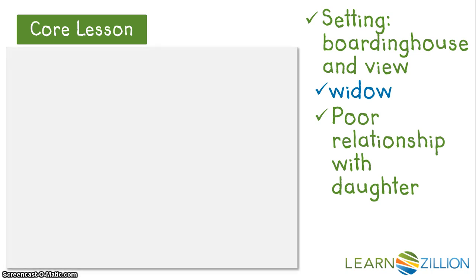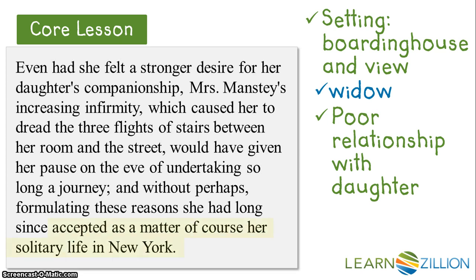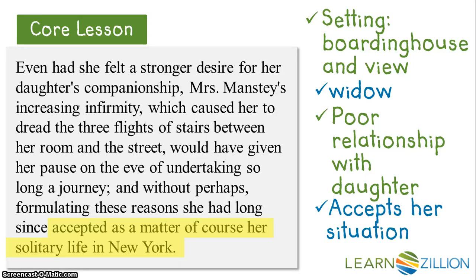In the last section, 'accepted as a matter of course a solitary life in New York' stands out. This tells us that Mrs. Manstey accepts her situation and is okay with living alone. This directly sets the reader up for the theme that one person cannot make a difference. Wharton starts the story telling the reader that Mrs. Manstey is all by herself with no allies. Then at the end of the story, she is still alone in her failed endeavor to stop the construction, thus bringing out the theme that one person cannot make a difference.